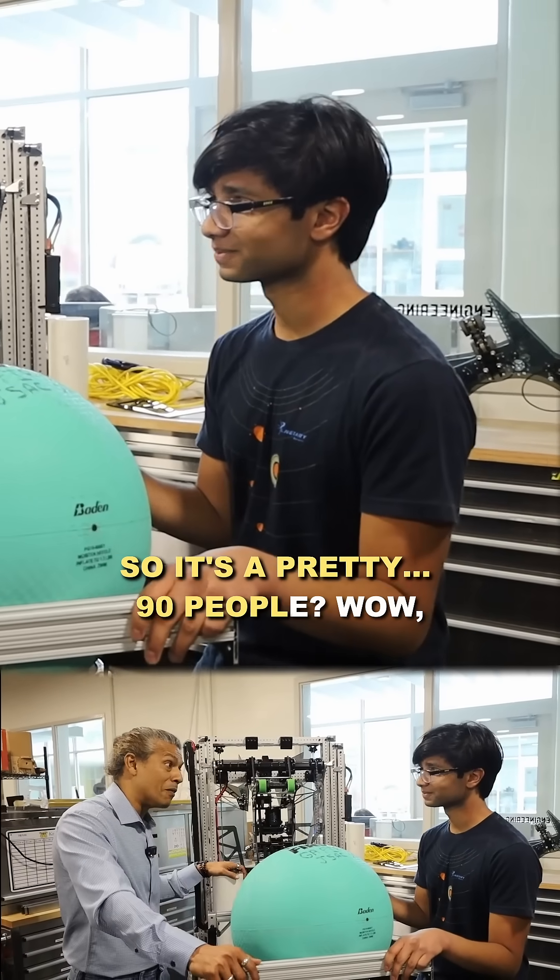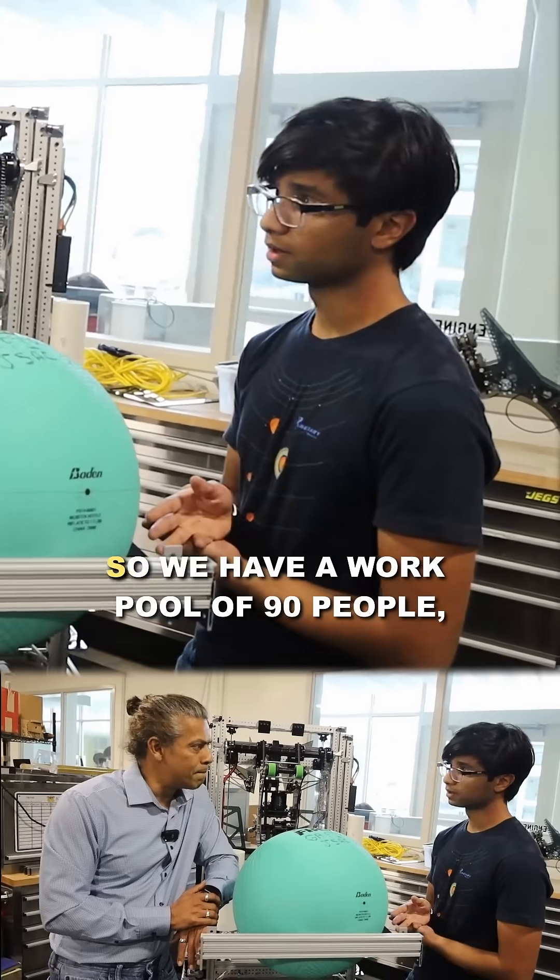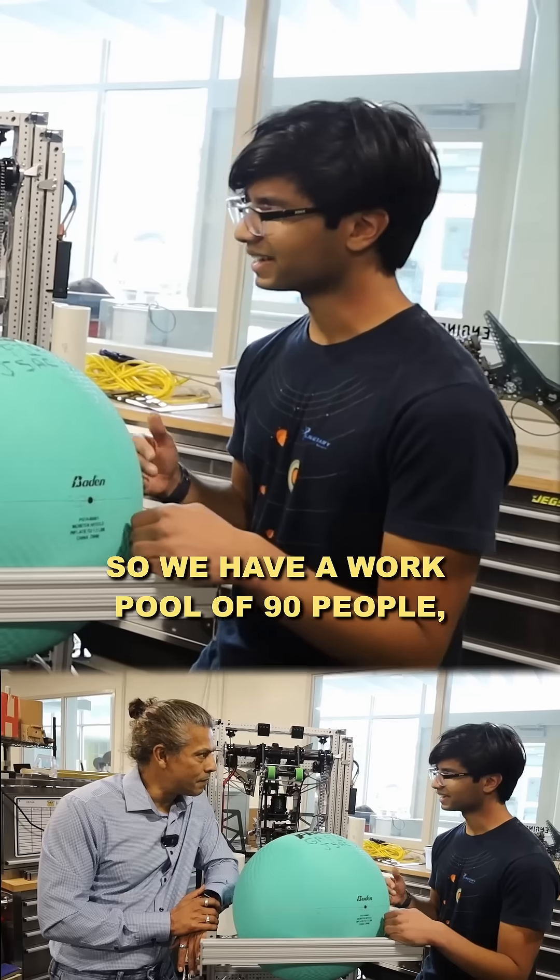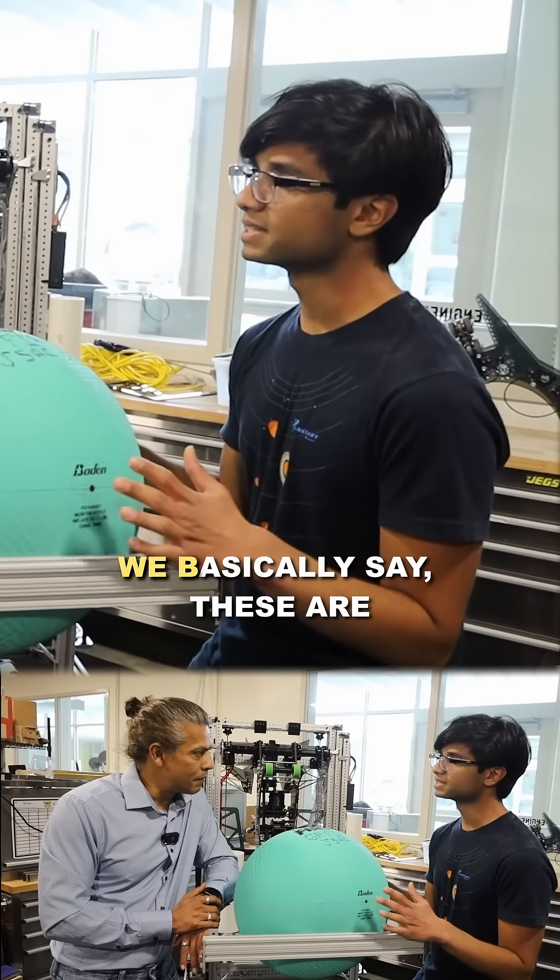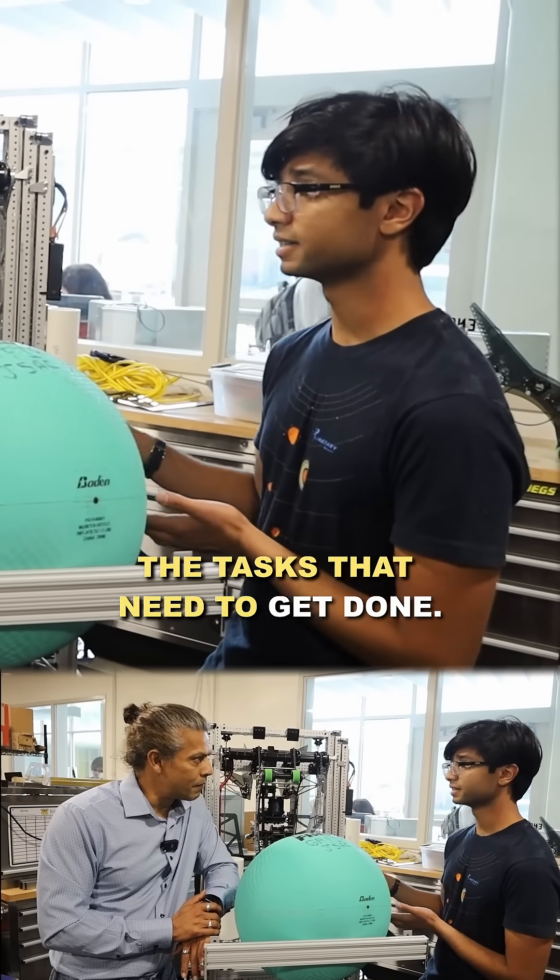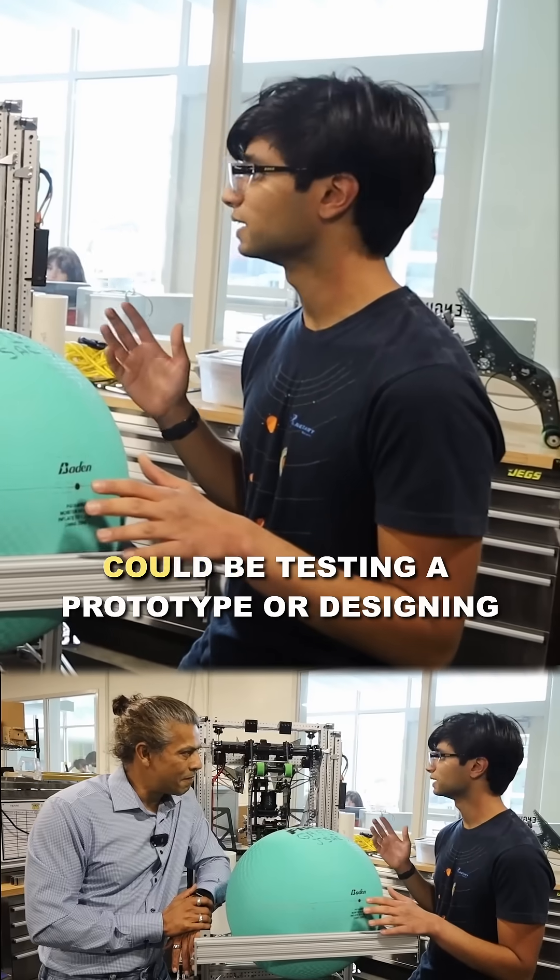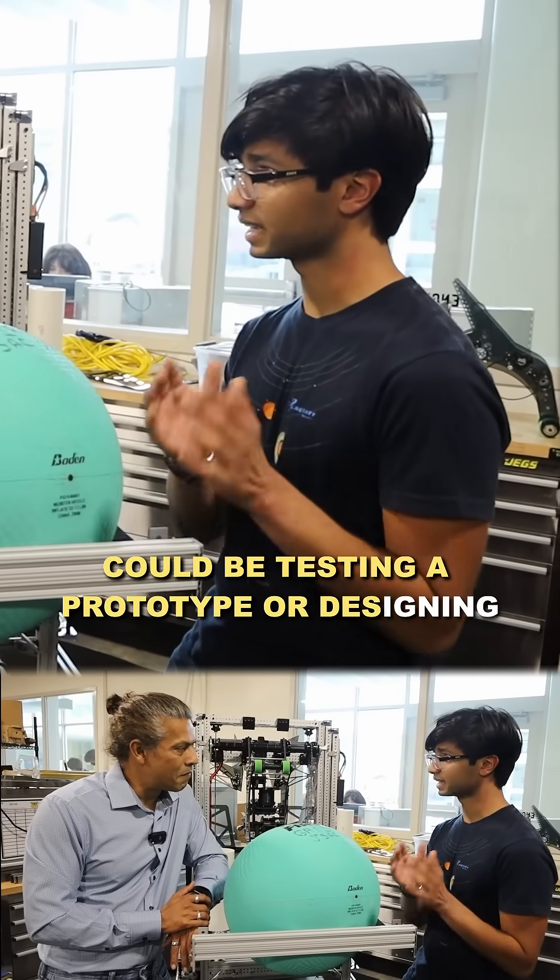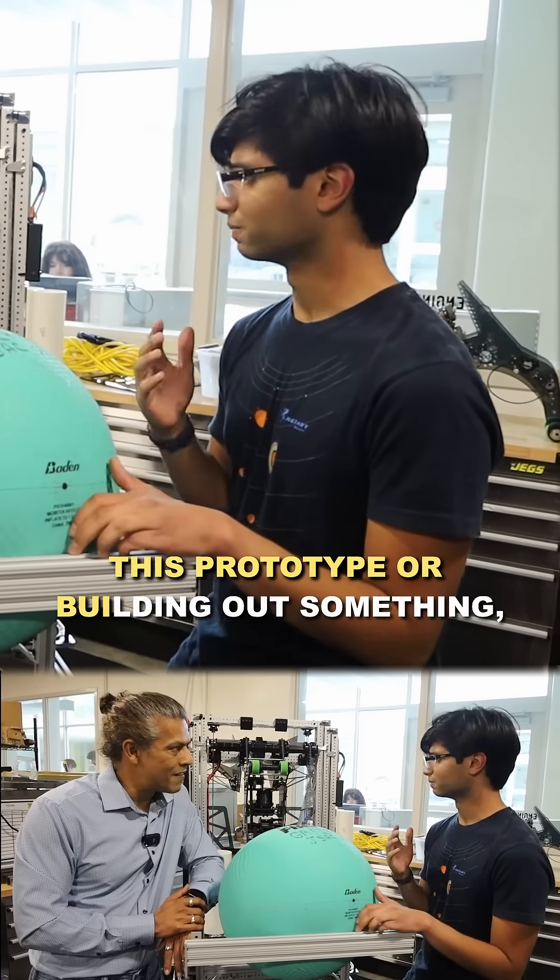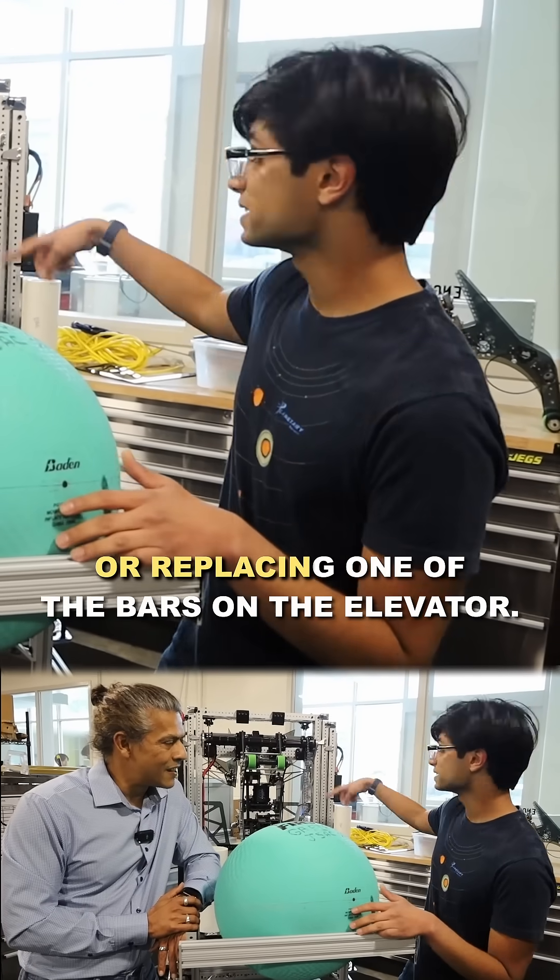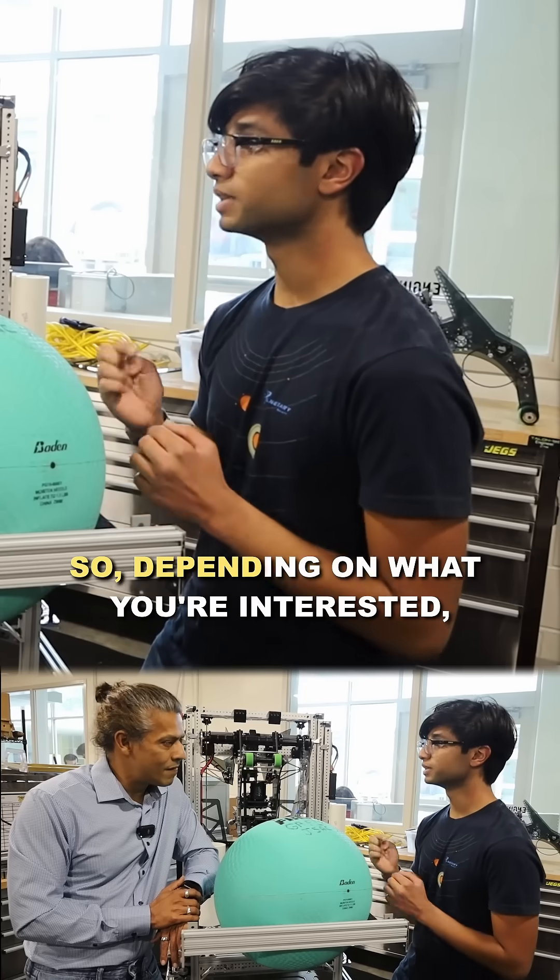How do you project manage this? We have 90 people, and at the beginning of practice we list the tasks that need to get done. We have one junior leader in charge of each task—like testing a prototype, designing a prototype, building something, or replacing one of the bars on the elevator.